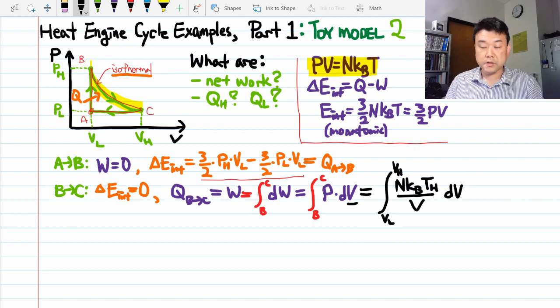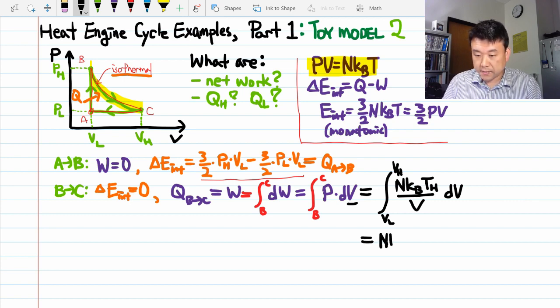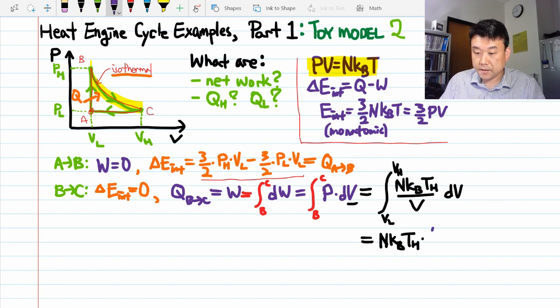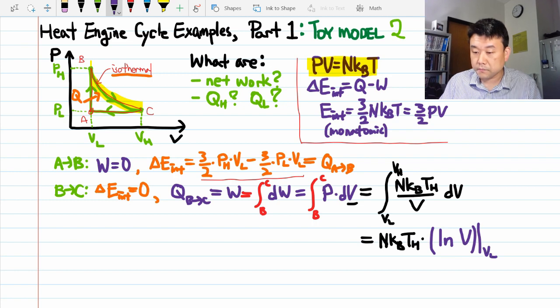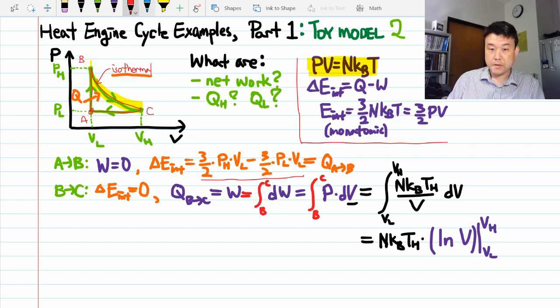I think I know how to do this integral. Integral of 1 over x is natural log of x. So, factor out the constant, NkT times the antiderivative evaluated from the low limit to the high limit. Now, when you plug in those limits, this is what you get.